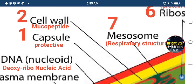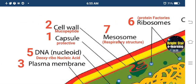The outermost layer is the capsule, which is protective in function. Inside the capsule, the cell wall is present. In plants, the cell wall is made up of cellulose — don't forget cellulose. Here in the bacterial cell, the cell wall is made up of mucopeptides. So the similarity is the presence of a cell wall, but the difference is: plant cell wall is made up of cellulose, whereas bacterial cell wall is made up of mucopeptides.